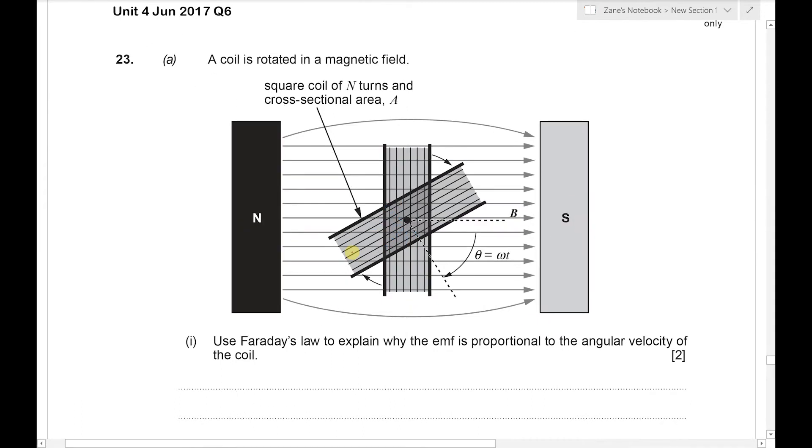Hello and welcome to another WJEC A-level physics question. This time it's question six from June 2017 unit 4. This is the option for AC theory, AC circuits. To start with we've got a coil rotated in a magnetic field, a square coil that's got n turns and a cross-sectional area A. We've got to use Faraday's law to explain why the EMF is proportional to the angular velocity of the coil.